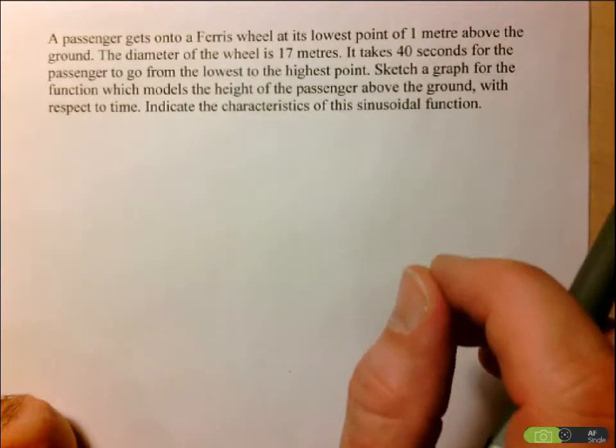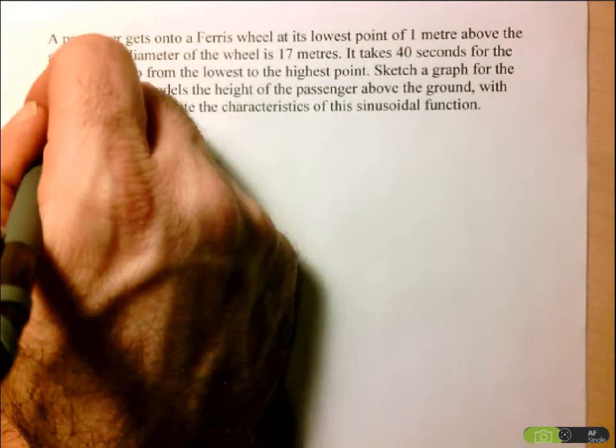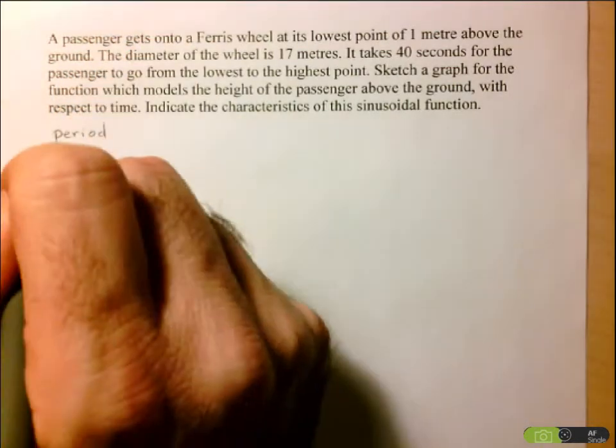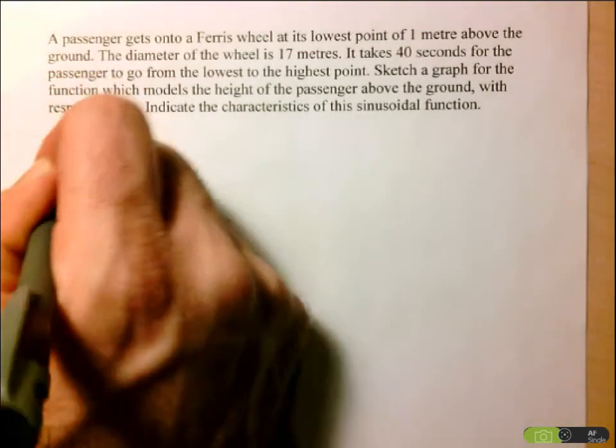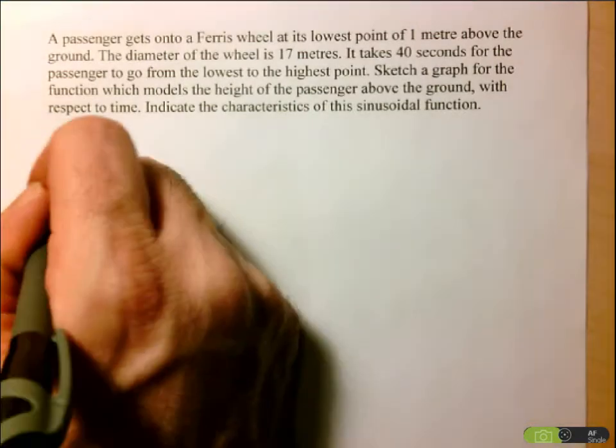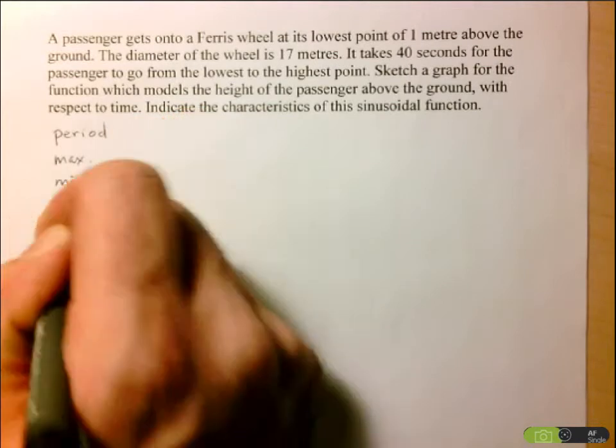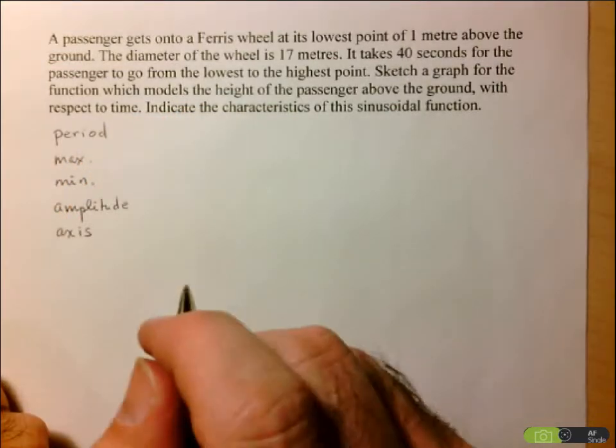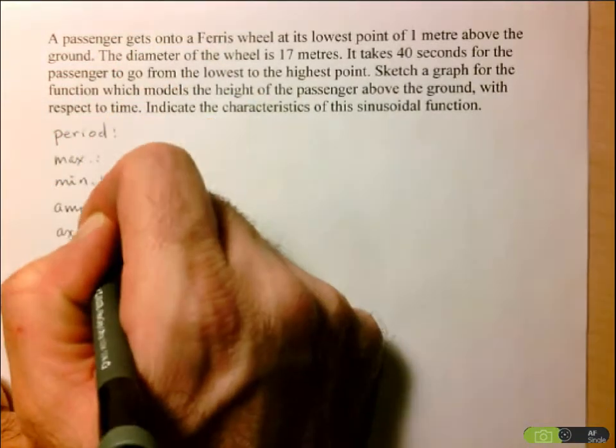Let's start by listing what we mean by the characteristics of the sinusoidal function. One thing that's important with any periodic function is the period, so we want to determine the period. We want to determine the maximum and the minimum. And then we know that once we have the maximum and minimum, we can determine the amplitude. These are the five characteristics that we're looking for.